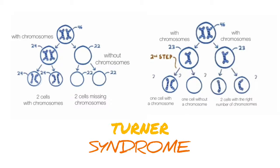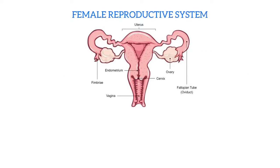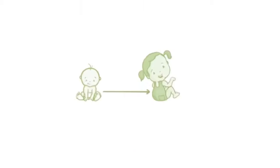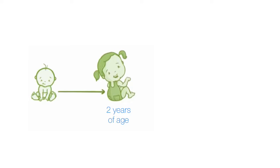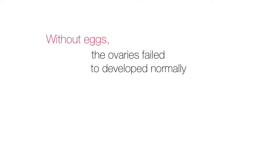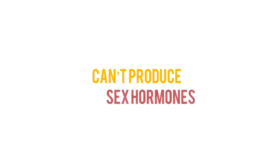Having only one complete X chromosome impacts the female reproductive system by increasing the rate of loss of eggs. By 2 years of age, none are left, essentially causing menopause before menarche. Without eggs, the ovaries fail to develop normally, becoming non-functional fibrosed streaked ovaries, which can't produce sex hormones.